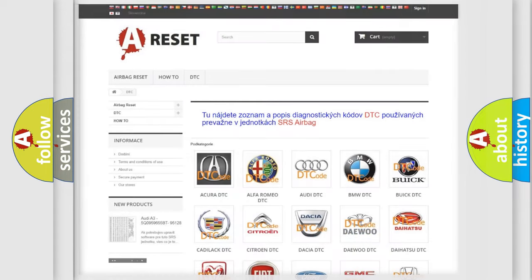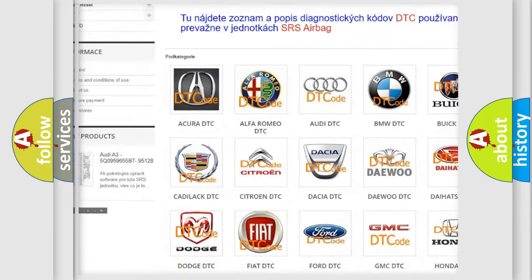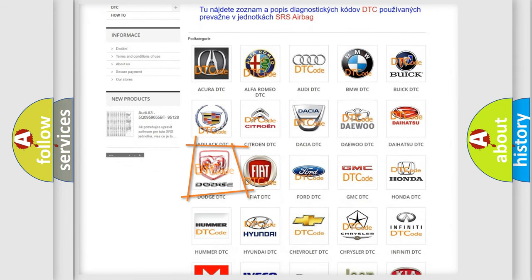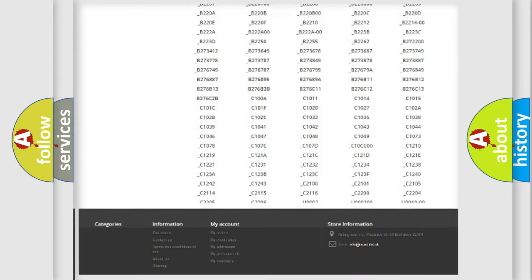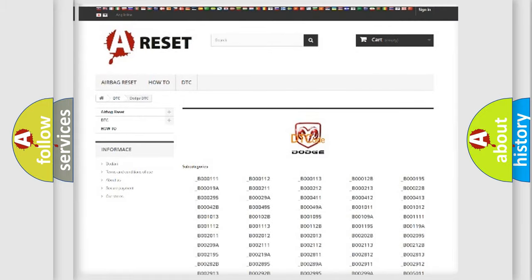Our website airbagreset.sk produces useful videos for you. You do not have to go through the OBD2 protocol anymore to know how to troubleshoot any car breakdown. You will find all the diagnostic codes that can be diagnosed in Dodge vehicles, and also many other useful things.